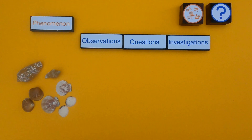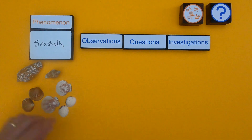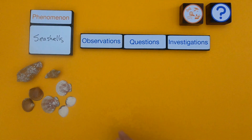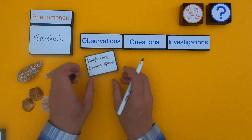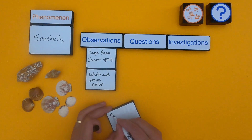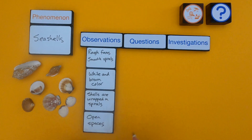The first thing we do when looking at observational questions is define the phenomenon. We're trying to ask some observational questions about the seashells themselves. The first thing I'd do is list a bunch of observations — don't just think about what you see, but also what you might feel.